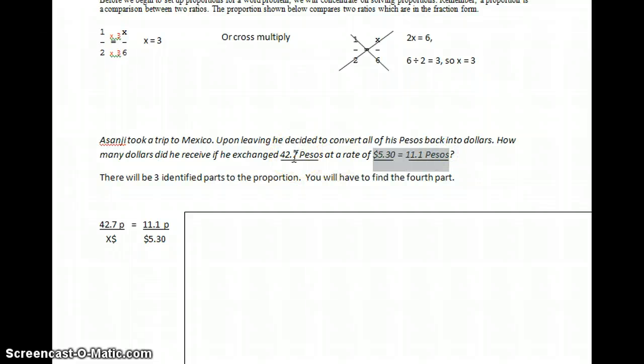Now I've got to put 42.7 pesos in there somewhere on the next fraction. Because I put pesos here, I know to put 42.7 on the top to coincide with the 11.1. And then on the bottom, I've got my variable, x dollars. I just put it that way.